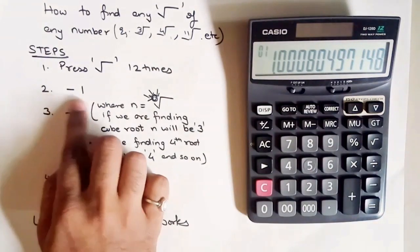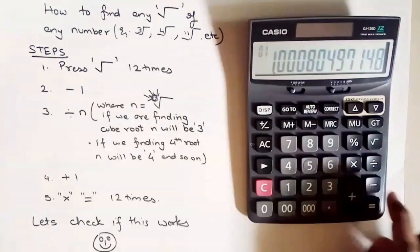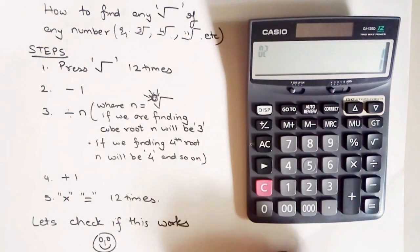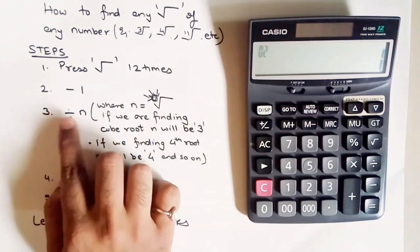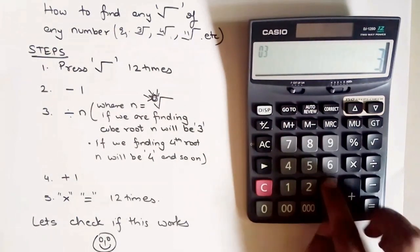Step number 2, minus 1. Now divide by n. n will be 3, divide by 3.